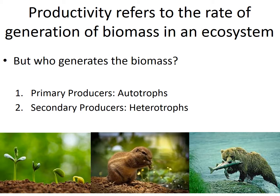Autotrophs are organisms that make their own food, generally using light energy such as photosynthesis, and they use this to make complex organic compounds such as carbohydrates, fats, and proteins. Heterotrophs, on the other hand, are consumers — organisms that cannot generate their own energy and instead have to eat other organisms.